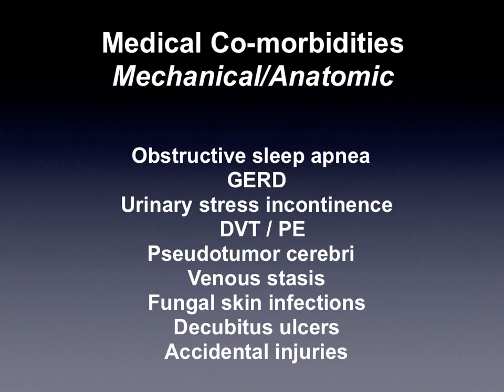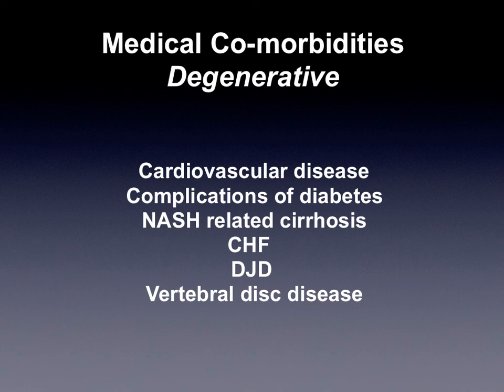Likewise, we see sleep apnea, GERD, and pseudotumor cerebri as mechanical and anatomic problems created with obesity. Long term, if those diseases become terminal, we see early cardiovascular disease, early diabetes with loss of limb and loss of sight, loss of kidney function, and being on dialysis. We're also seeing liver cirrhosis related to fatty liver disease, which we didn't see 15 years ago. Studies are showing that the number of patients needing transplants related to fatty liver disease is going to be chasing that of those from alcohol consumption.